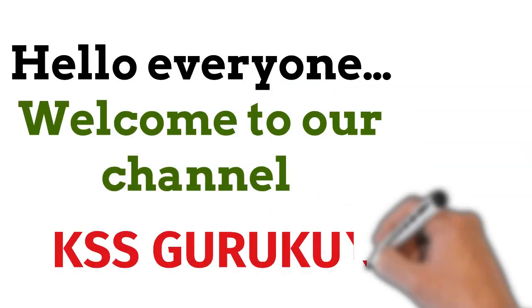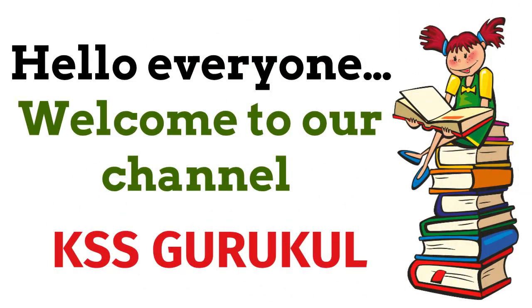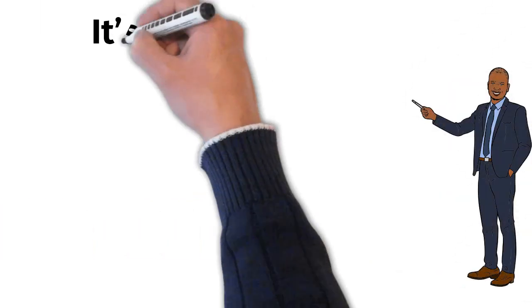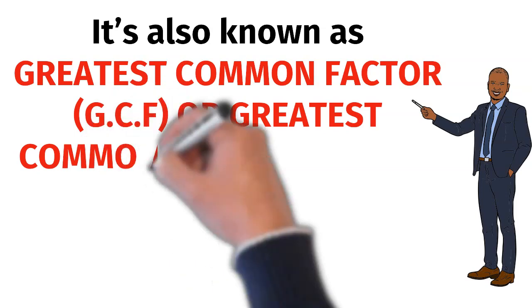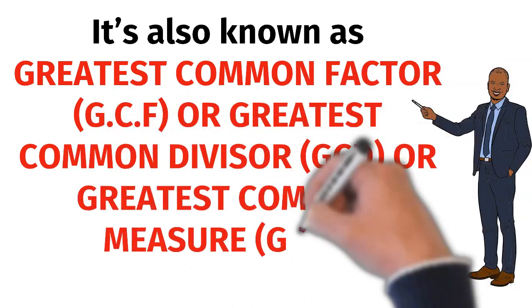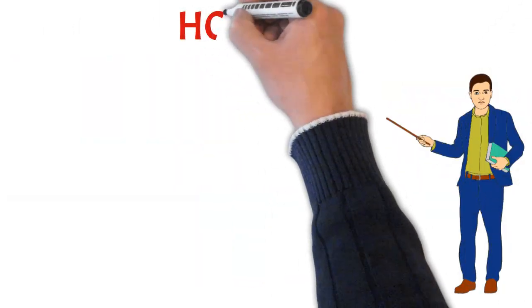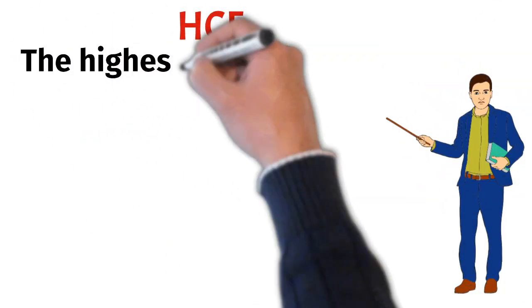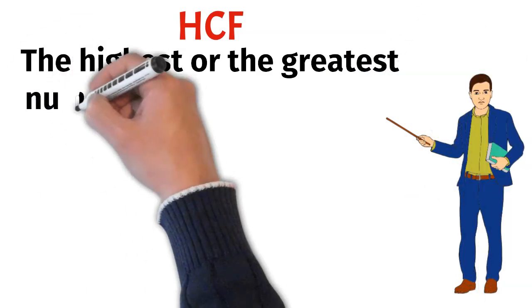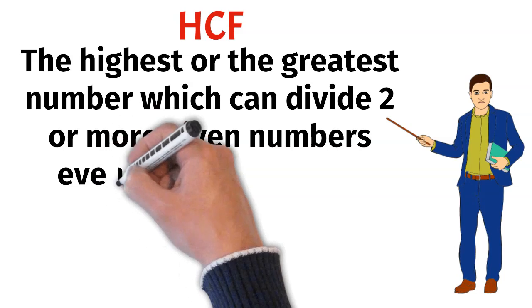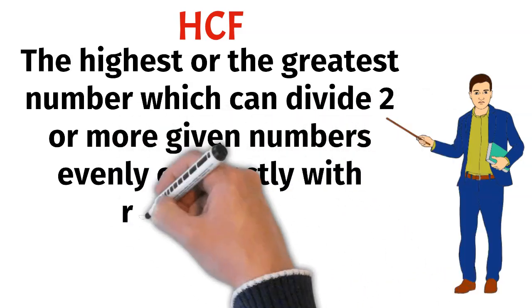Hello everyone, welcome to our channel KSS Gurukul. Today we will discuss about the highest common factor or HCF. It is also known as greatest common factor, greatest common divisor, or greatest common measure. The highest or greatest number which can divide 2 or more given numbers evenly or exactly with remainder 0 is known as HCF of that number.